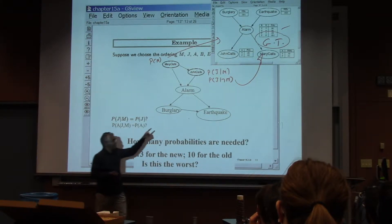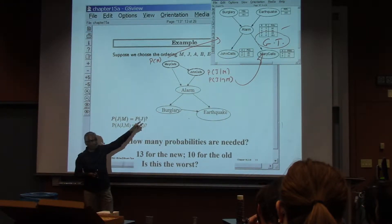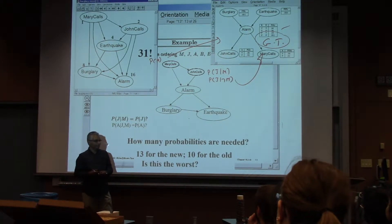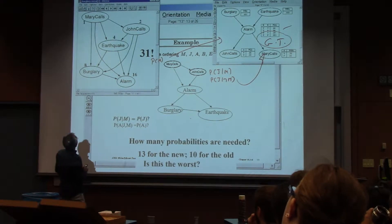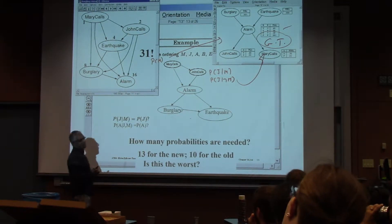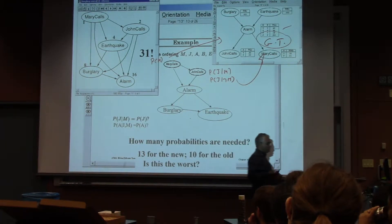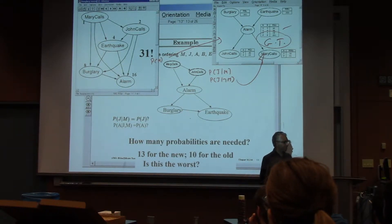And then of course, this is not even the worst. What is the worst for this scenario? It will have to be essentially 31 probabilities, and that network responds to that. So you put in, first of all, Mary Calls, then John Calls, then earthquake, then burglary, then alarm. In that case, you can convince yourself that most of the dependencies hold and then you have to wind up using all the errors.